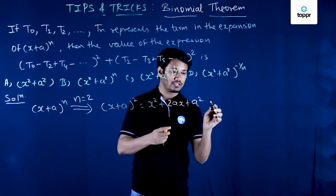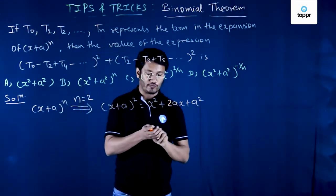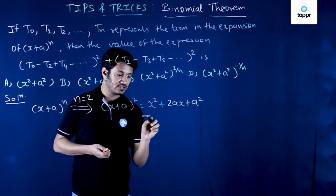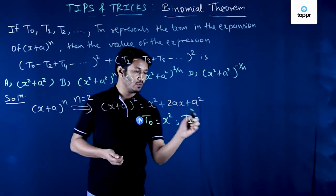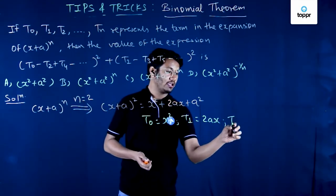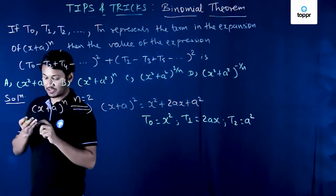If you look at all the terms then I can now write down t0, t1, t2. From here my first term t0 is nothing but x^2, t1 will be nothing but 2ax and t2 will be nothing but a^2. These are the three terms we have in the expansion of (x+a)^2.